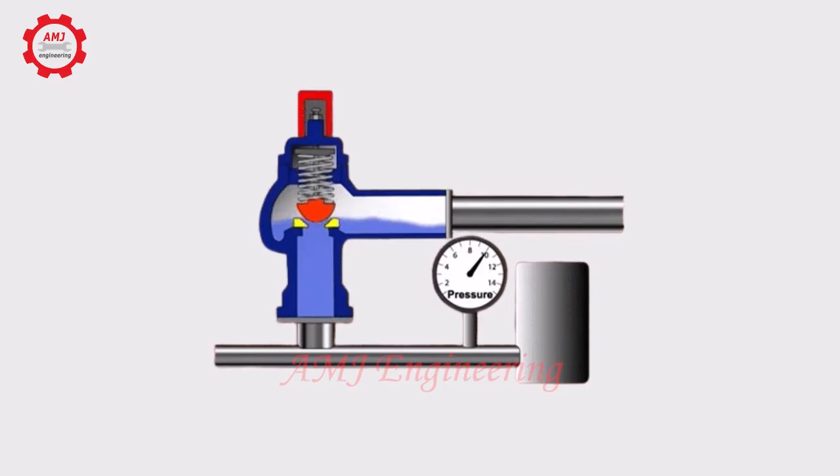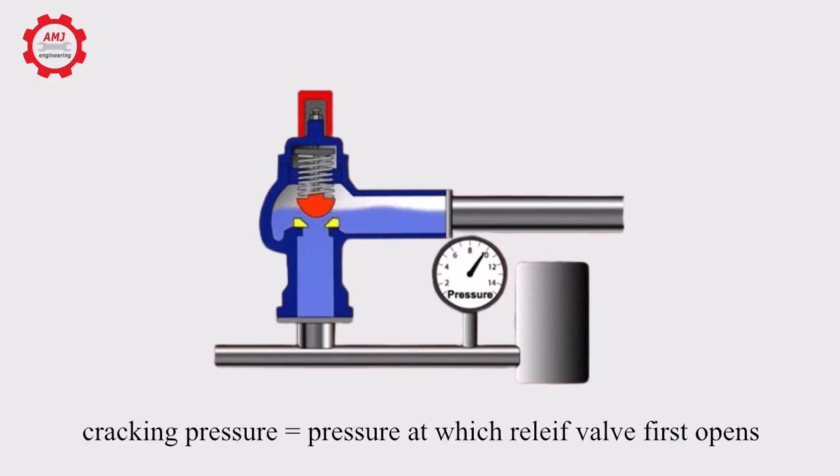The spring reseats the ball or poppet when enough fluid is released to drop system pressure below the setting of the valve spring. The pressure at which a relief valve first opens to allow fluid to flow through is known as cracking pressure.